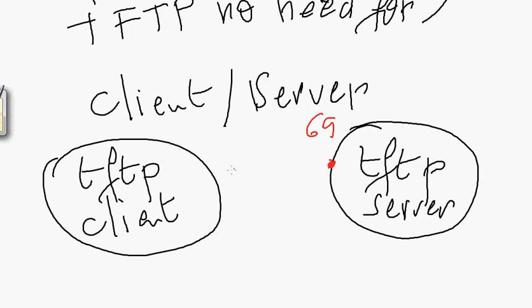Whenever a TFTP client wants to download a file from the TFTP server, it creates a process. The port number will be assigned by the operating system — let's say port 50,000. This process sends a UDP datagram containing the command to the TFTP server, which is listening at port 69. Once the server receives this command, it sends the data back to the TFTP client.